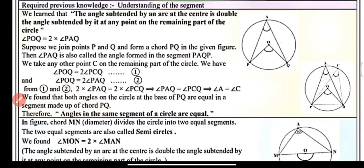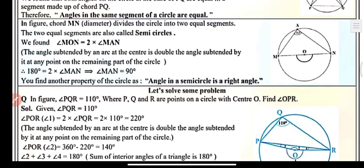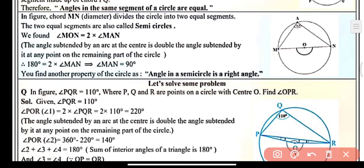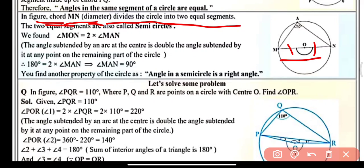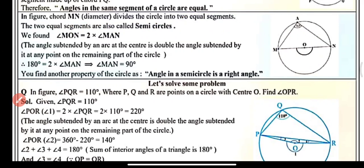So now we have a figure — a circle with center O — where chord MN is the diameter. MN is the longest chord that passes through the center of the circle. Chord MN, being the diameter, divides the circle into two equal segments. These two equal segments are known as semi-circles.